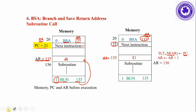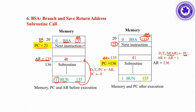Then the PC is updated with AR plus one so it executes the subroutine. At the end of the subroutine there is an indirect BUN containing 135. Since it is an indirect BUN, it goes to the 135th location where 21 is stored. That 21 is the effective address, which is copied into the PC, so after the subroutine the program continues with the 21st instruction.